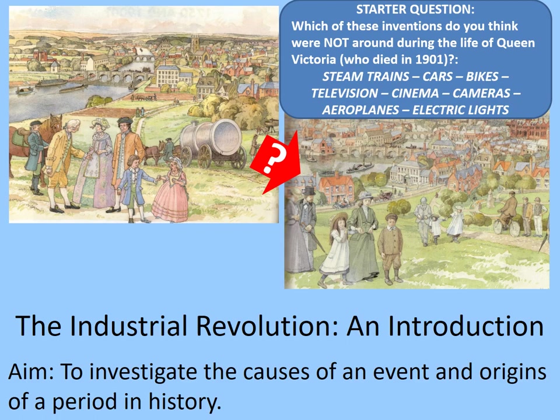Here's a do-now task. Which of these inventions do you think were not around during the life of Queen Victoria, who died in 1901? Steam trains, cars, bikes, television, cinema, cameras, aeroplanes and electric lights. Pause the video now while you note down the inventions that weren't there and the inventions that did exist during the life of Queen Victoria. You might find it helpful to add these to a table.